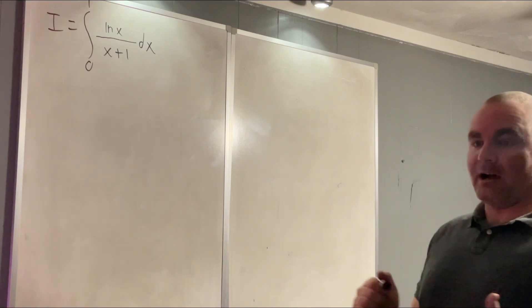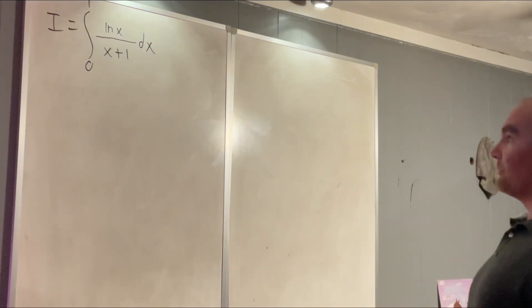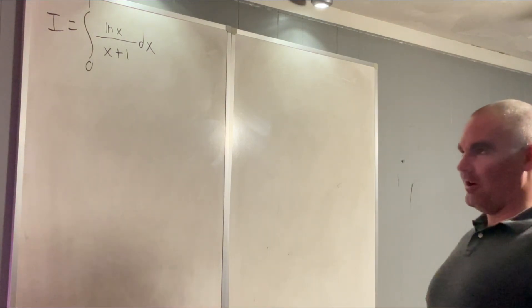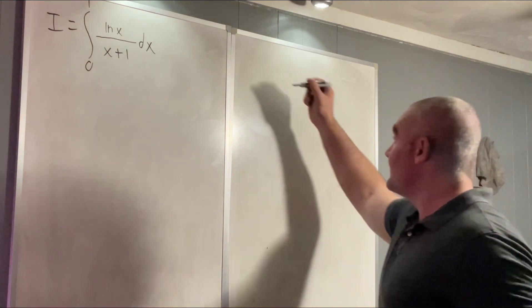We're going to be using a bunch of tools today. We're going to be using a result that we found in the previous video that is the alternating sum of the reciprocals of the squares. In other words, this: